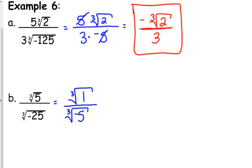We've got the cube root of one on top — the cube root of one is one — so that's one less radical to deal with. And I don't like that negative under the cube root, so I'm going to move it in front. Technically it's because it's negative one times five and the cube root of negative one is negative one, but if you just understand that a negative under the cube root can come out, that works.